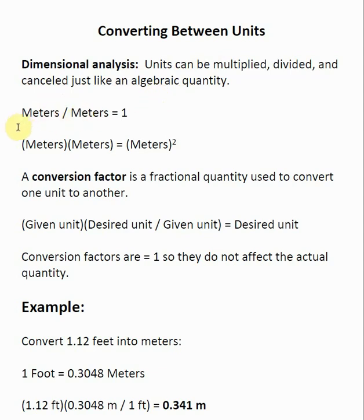A good example of this: if I take the unit meters and divide by the unit meters, these two cancel each other out and are equal to 1 — that's what we mean by algebraic quantity. Also, if I take the unit meters and multiply by another unit of meters, I get meters squared. So this is the idea of dimensional analysis in its most fundamental form, and we will be using it later on to help us check whether we're doing a calculation correctly.